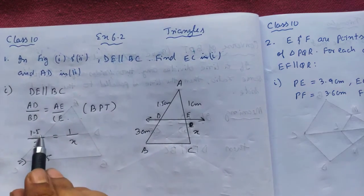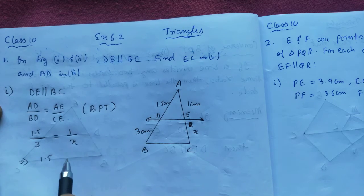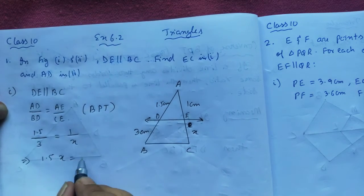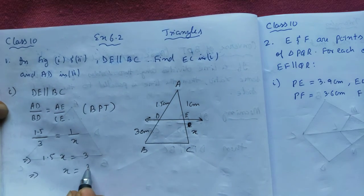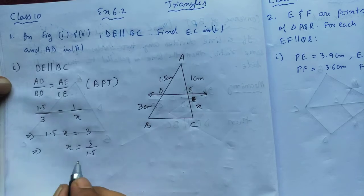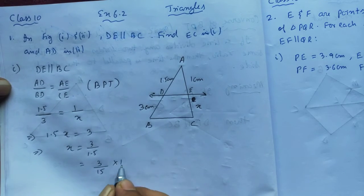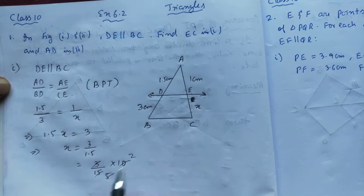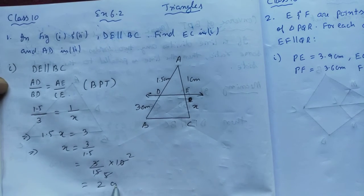Put in the values: AD is 1.5, BD is 3, AE is 1, and CE is X. Cross-multiplying: 1.5 × X = 3 × 1, which gives 1.5X = 3. So X = 3/1.5. Removing the decimal and cancelling, 3/1.5 becomes 30/15, which simplifies to 2.